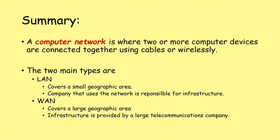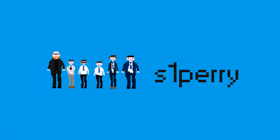In summary, a computer network is where two or more computer devices are connected together using cables or wirelessly, and there are many advantages to doing this. The two main types we need to know about are local area networks — these cover a small geographic area and the company that uses the network is responsible for the infrastructure — and wide area networks (WANs), which cover a large geographic area and whose infrastructure is provided by a large telecommunications company, with the business leasing access from them. I hope that was informative for you. I will see you in the next lesson. Goodbye.